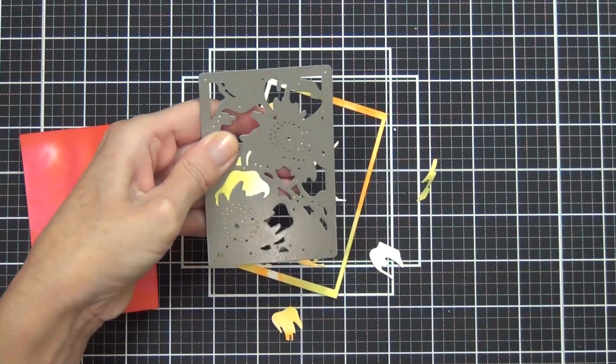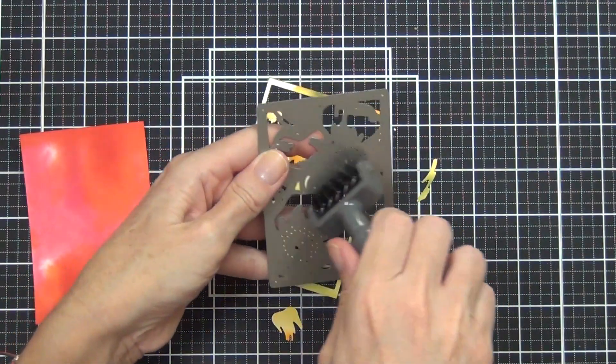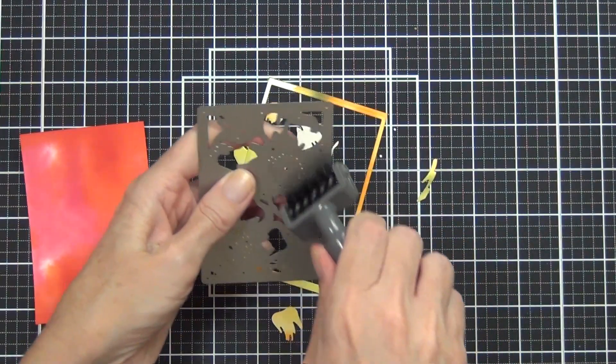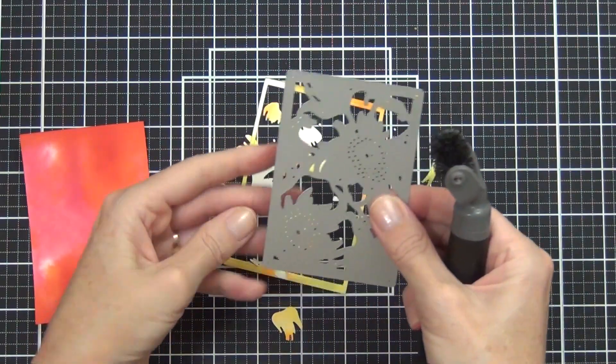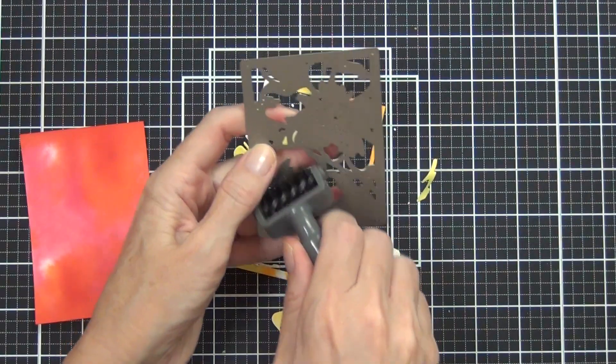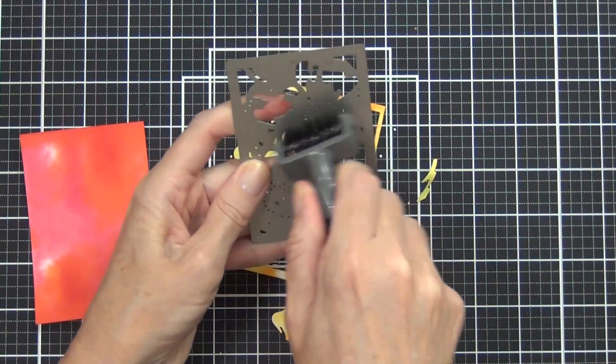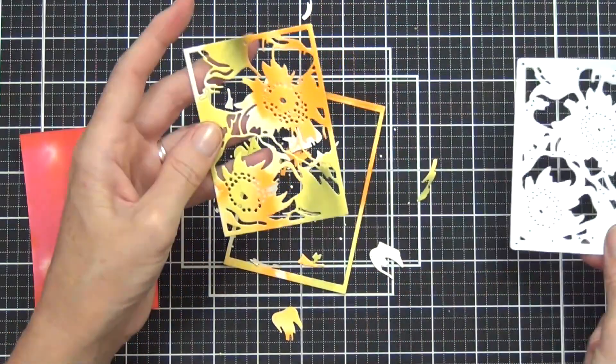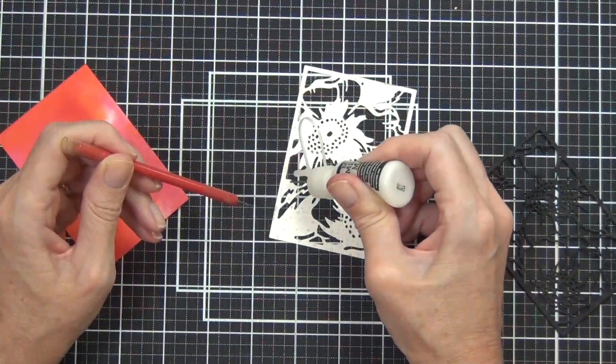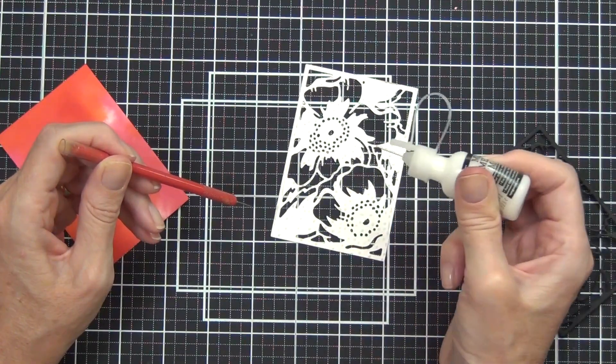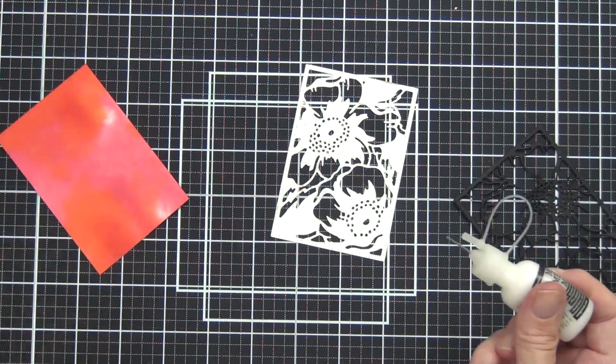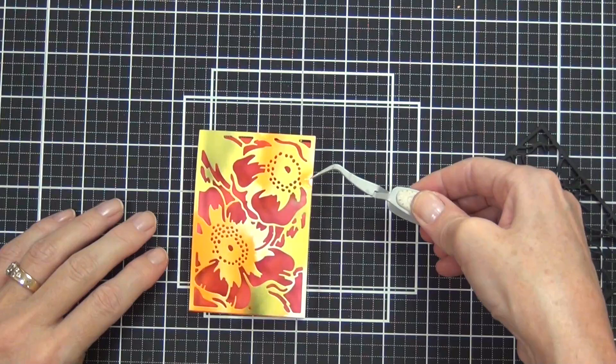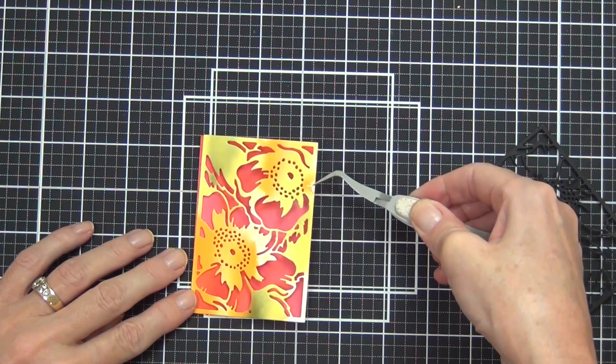Once that had dried, I simply did the die cutting. I started by die cutting the B plate from my yellow and green piece of cardstock here. I've got one of these brush tools and I did use my metal shim when I was die cutting this out because it is quite an intricate die, especially with all those little holes in the center of the flowers where the stamens are.